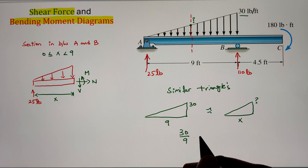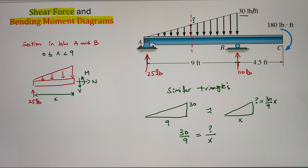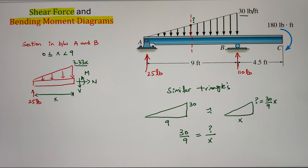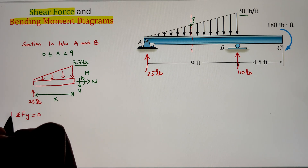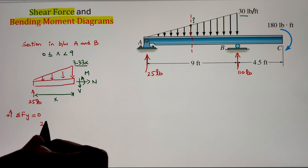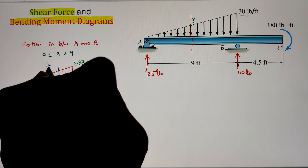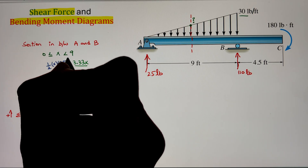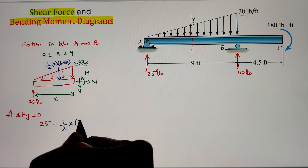Let's consider the bigger triangle having a base of 9 and a height of 30. This triangle is similar to the smaller triangle in our free body diagram, in which the base is X and the altitude we have to calculate. Since both are similar triangles, the ratio of their sizes are equal. Equating the two ratios, we can calculate the height of our section triangle as 3.33X. Once we have the altitude, we can convert this distributive loading into a point load by calculating the area of this triangle as half times X times 3.33X.